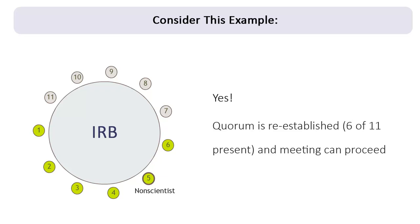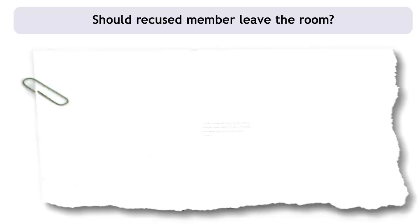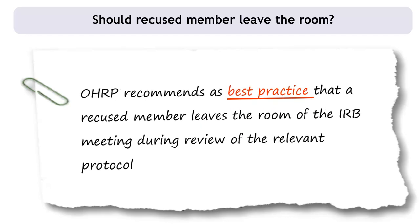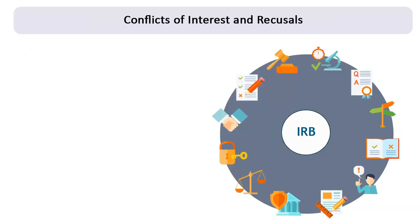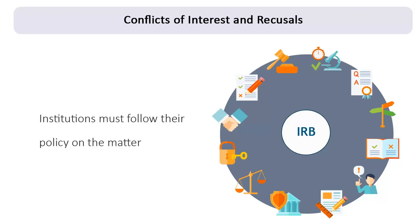The IRB minutes should reflect when the quorum is lost in a meeting and when it is restored. Although there is no regulatory requirement that a recused member who has a conflict leave the room during the IRB meeting while other members review the protocol, OHRP recommends this as best practice. According to the regulations, institutions must abide by their own policies regarding the IRB's initial and continuing review procedures. So if an institution's IRB policy requires that recused members with a conflict of interest leave the room, the institution must follow this policy in order to be compliant with the regulations.